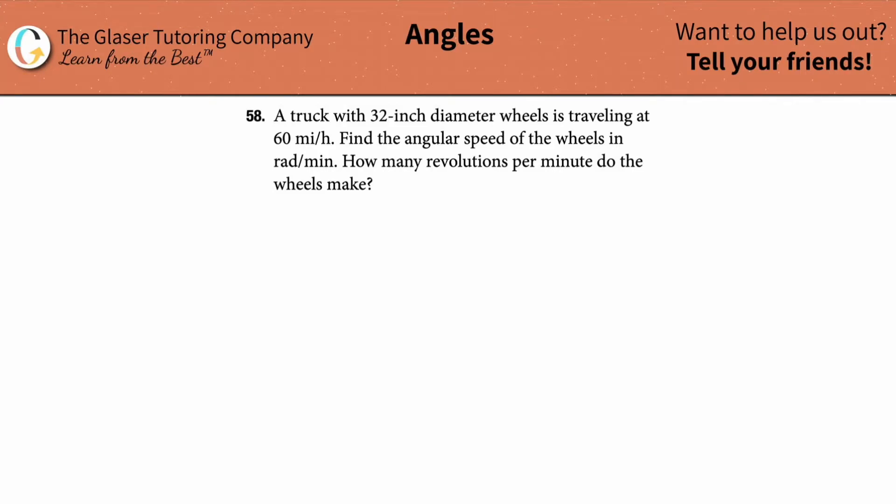Number 58. A truck with 32-inch diameter wheels is traveling at 60 miles per hour. Find the angular speed in radians per minute, and how many revolutions per minute do the wheels make? I think it might make sense to answer the second question first, revolutions per minute.